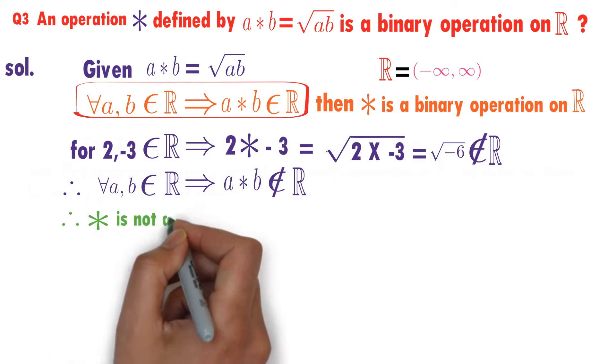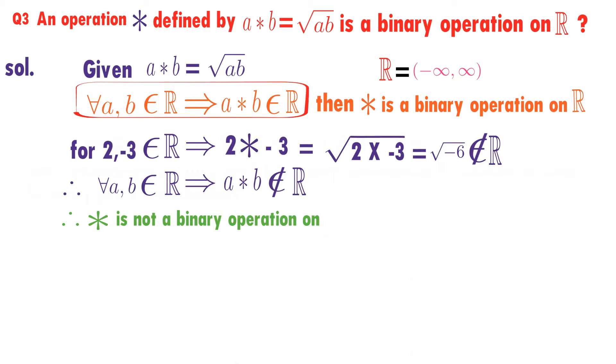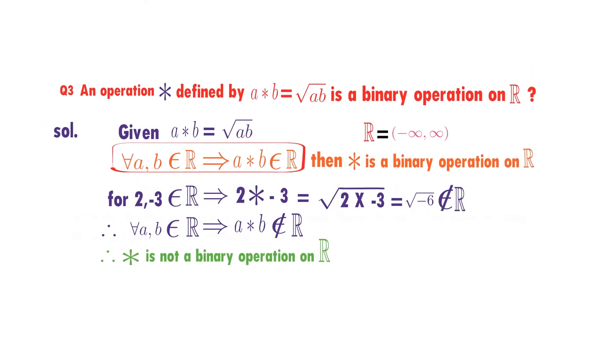from this we can conclude that star is not a binary operation on set of real numbers.